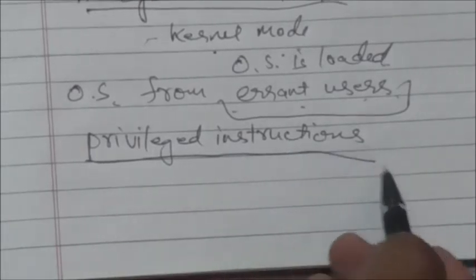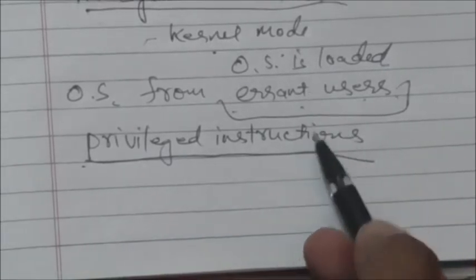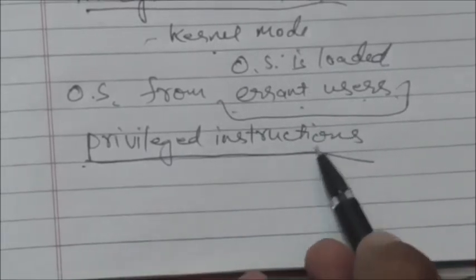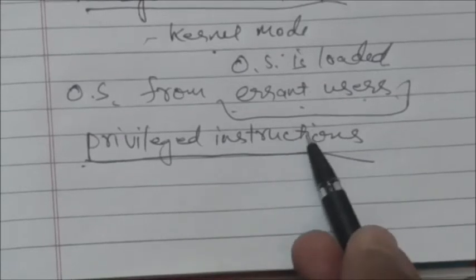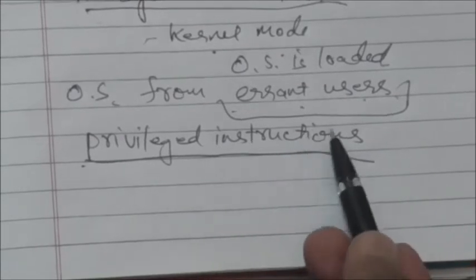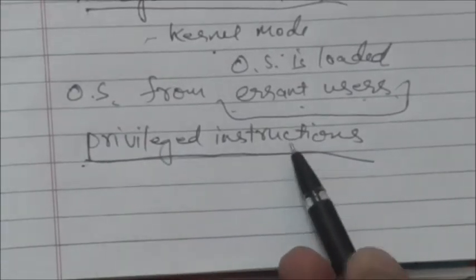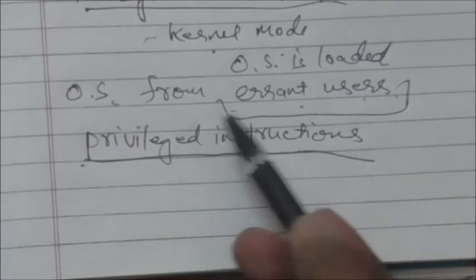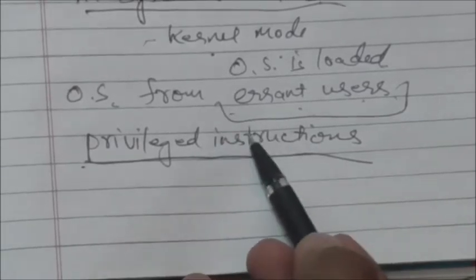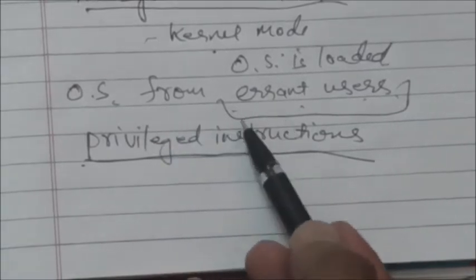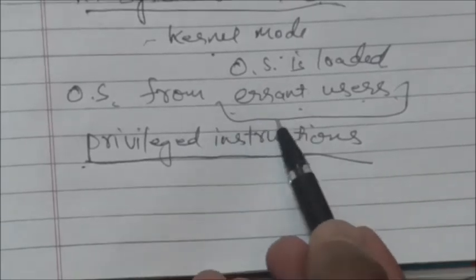In summary, machine instructions that can cause harm are designated as privileged instructions and are executed only in kernel mode. If an attempt is made to execute them in user mode, the hardware will not execute these privileged instructions.